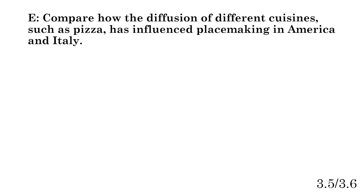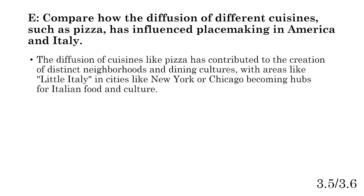Part E: compare how the diffusion of different cuisines like pizza has influenced placemaking in America and Italy. In the United States, the diffusion of cuisines like pizza has contributed to the creation of distinct neighborhoods and dining cultures — areas like Little Italy in New York and Chicago that become hubs for Italian food and culture. We see enclaves of Italian food, Italian culture, Italian residents in places like New Jersey, and chain restaurants blending American and Italian styles, like Olive Garden.